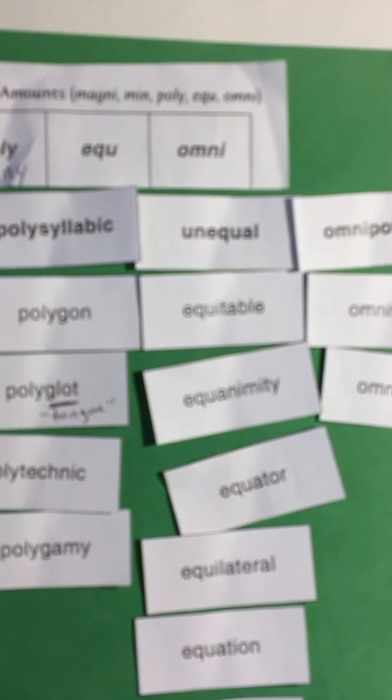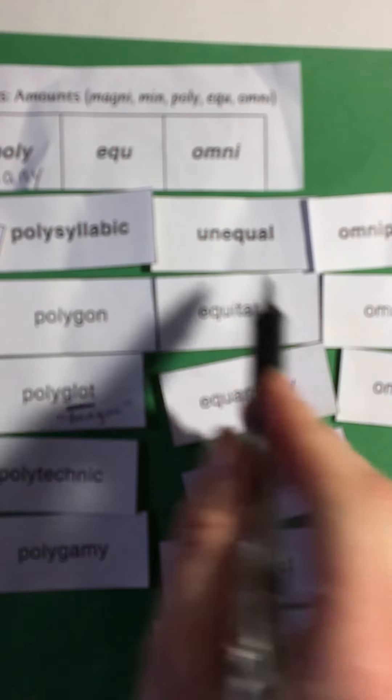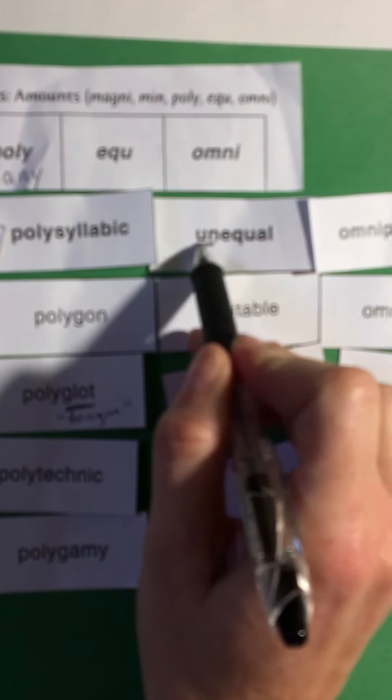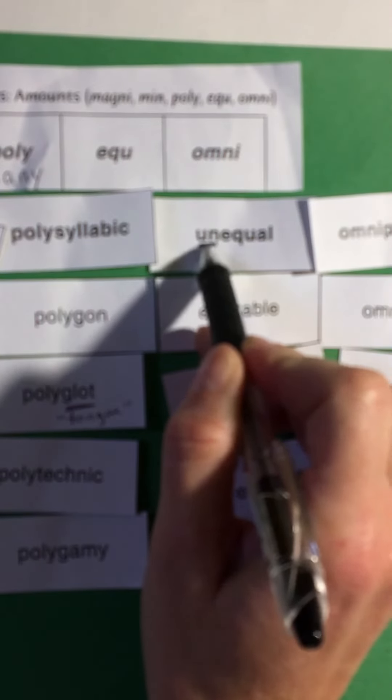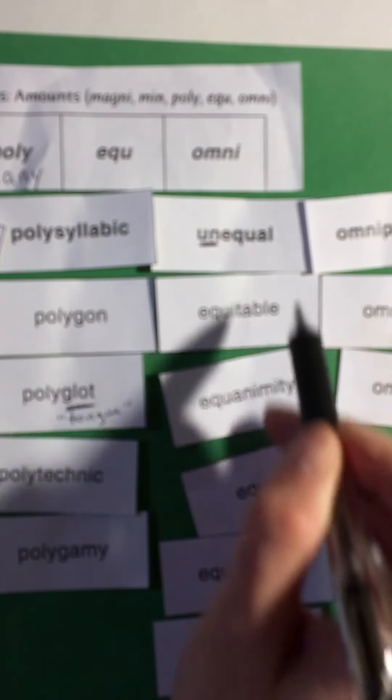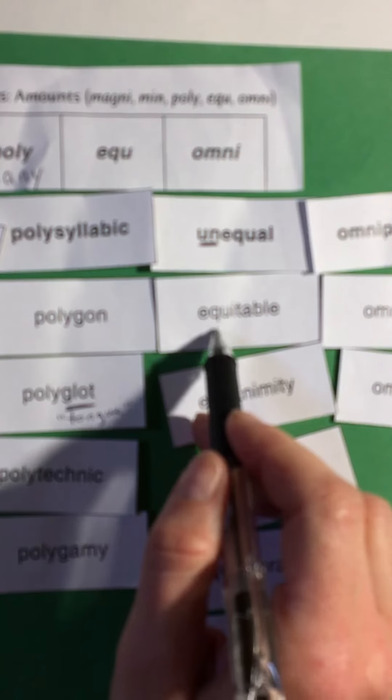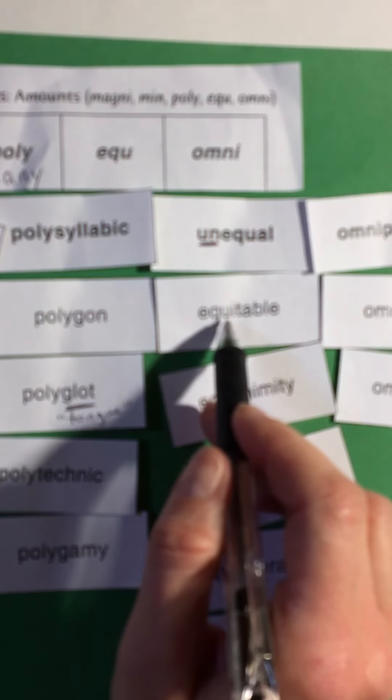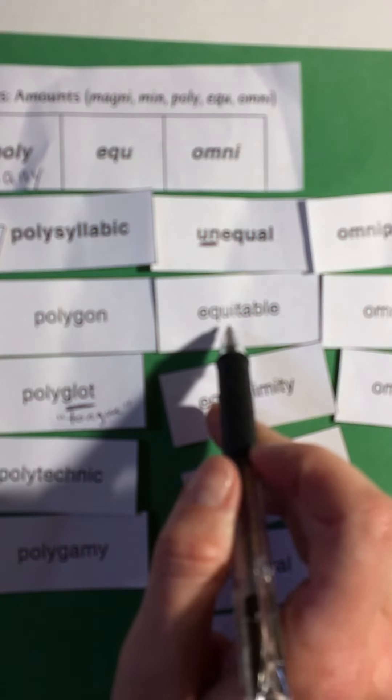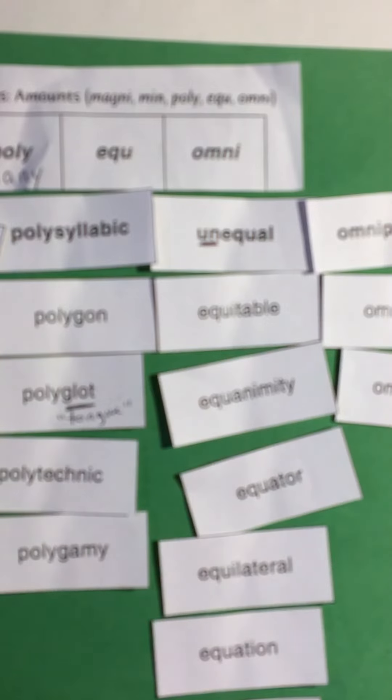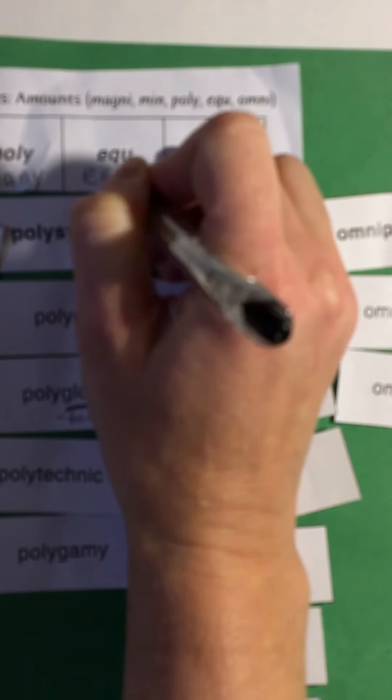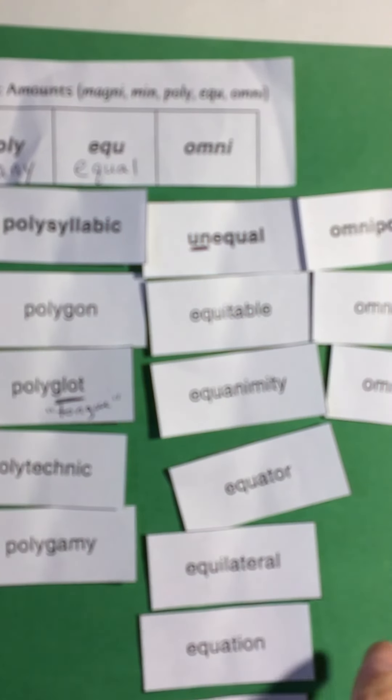So then we get to equ. Equ, I bet you have an idea. You know that the prefix un means not, so this means not equal. Equitable would be if you were trying to have an equitable solution and be fair to everybody, some people get this, some people get that. So I bet you already know that it all, it means equal, the same or maybe about the same.